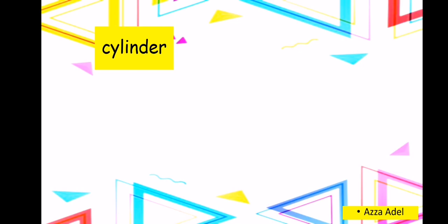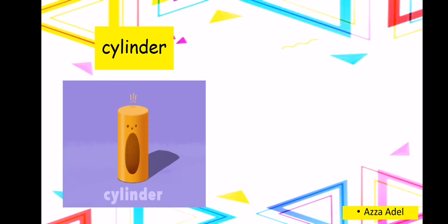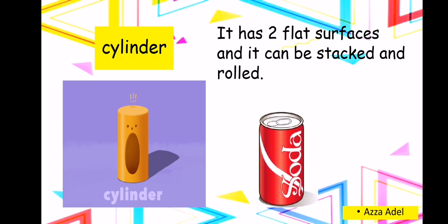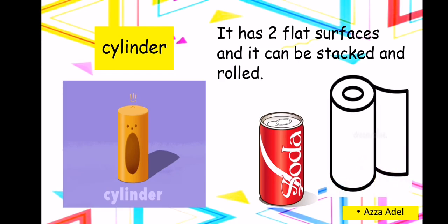Cylinder. A cylinder is a 3D shape that has two flat surfaces and it can be both stacked and rolled. We can stack it, put it over each other, and we can roll it on the floor. Such as a soda can: can you stack a soda can? Yes. Can you roll a soda can? Yes, so the soda can is a cylinder. And a tissue roll — a paper roll — you can stack it and you can roll it. It's a cylinder shape. Can you think of something else that's shaped like a cylinder?